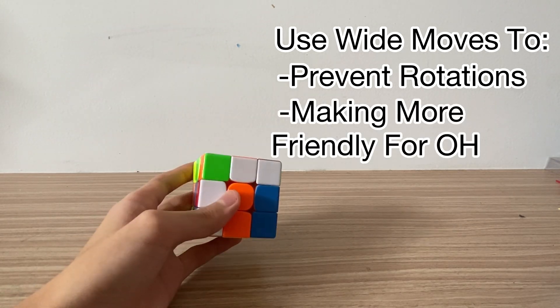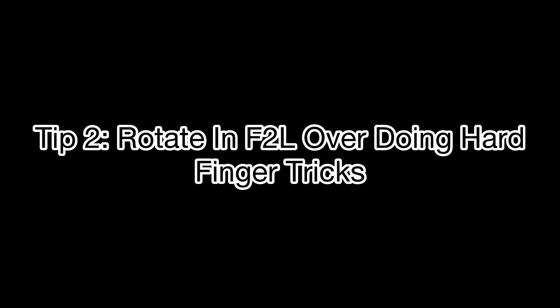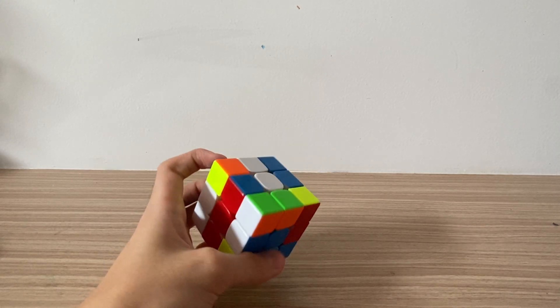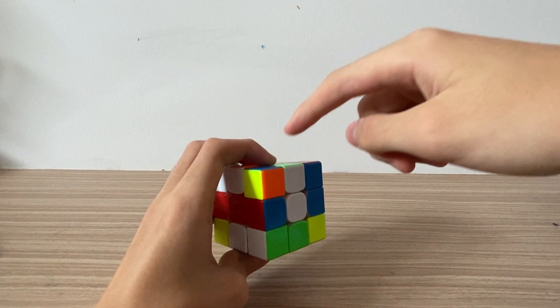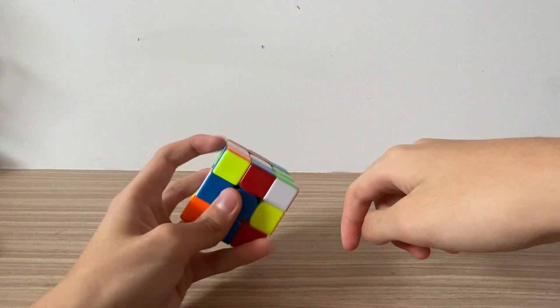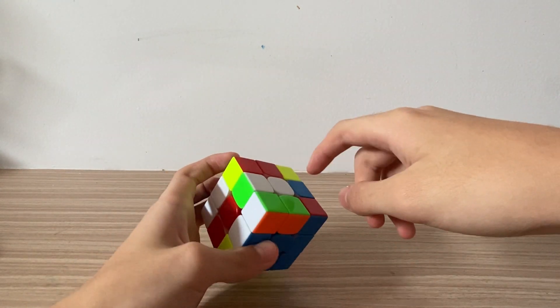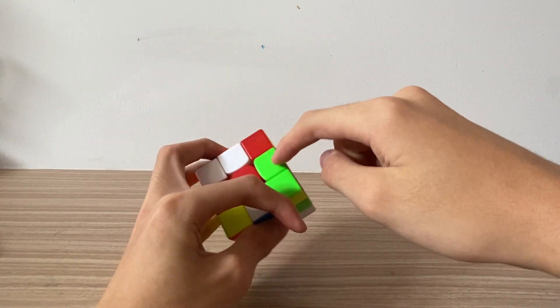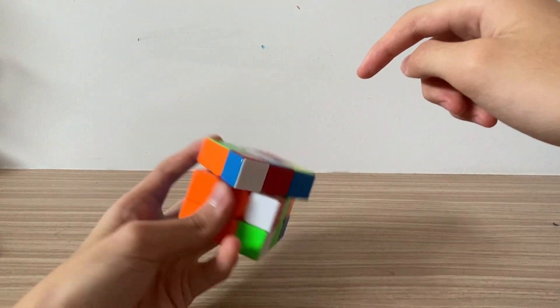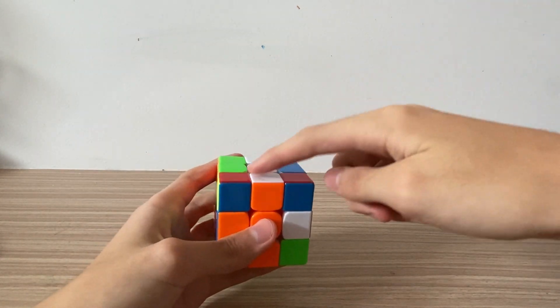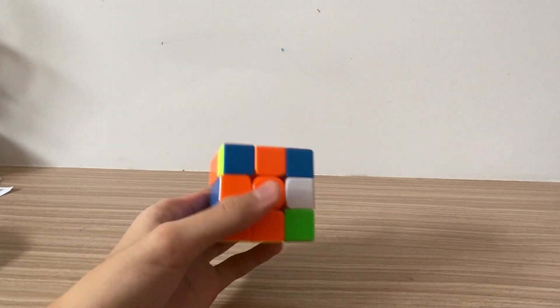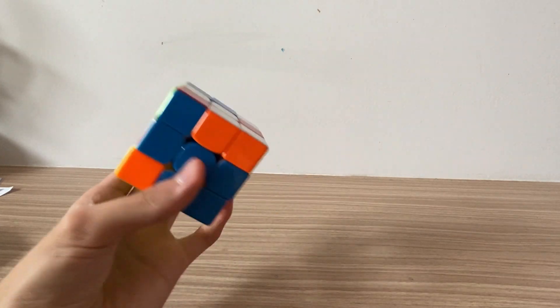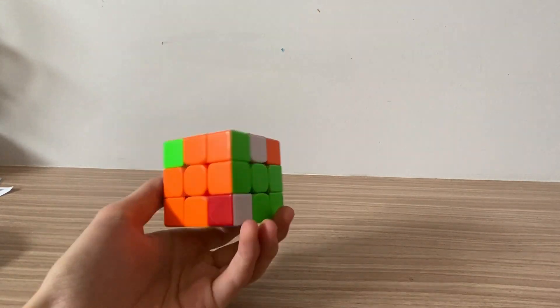Number two, choosing to rotate in F2L over doing hard finger tricks. So I'll just do a quick F2L example here. I see the orange-blue pair. Just a little quick. And I see that the free pair here. I'll just rotate here. And I see this. So I'll just rotate. And these two.